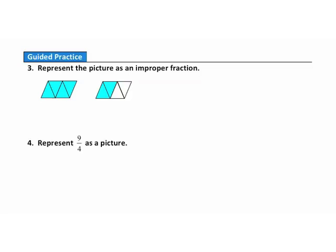Question 3: Represent the picture as an improper fraction. We'll draw a fraction bar and determine the denominator by looking at one object — it's divided into four pieces, so the denominator is four. The numerator is the number of shaded pieces: I have five, six shaded pieces, so the numerator is six. This picture represented as a fraction gives us six-fourths.